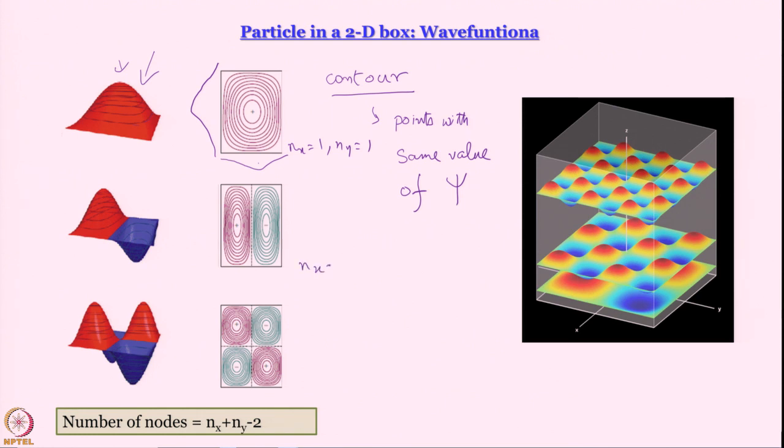This is nx equal to 2, ny equal to 1. So nx equal to 2 means your wave function will be something like this in x direction. Wave function will remain what it was in y direction. Now when you multiply what will happen? You consider this line here. At x equal to L by 2, you are multiplying the y dependent part of the wave function by a 0. This point is called a node. A node is where the wave function goes through 0 and changes sign.